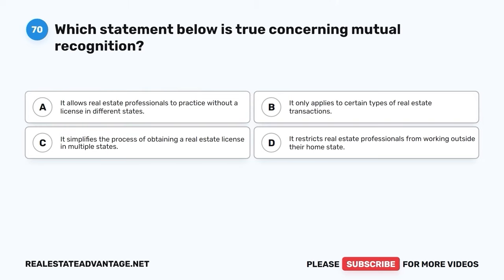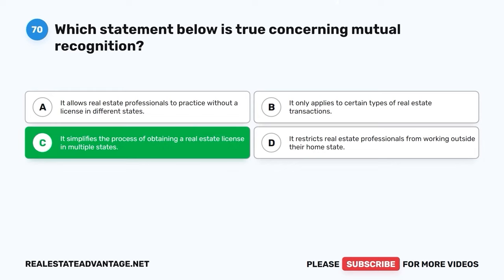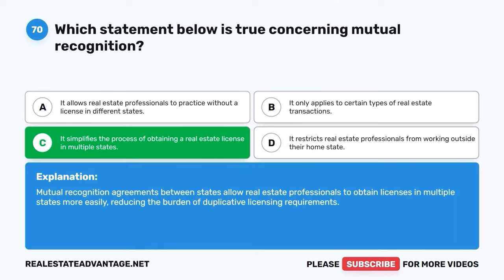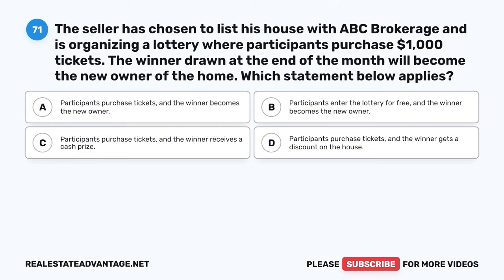Question 70. Which statement below is true concerning mutual recognition? A. It allows real estate professionals to practice without a license in different states. B. It only applies to certain types of real estate transactions. C. It simplifies the process of obtaining a real estate license in multiple states. D. It restricts real estate professionals from working outside their home state. The correct answer is C: It simplifies the process of obtaining a real estate license in multiple states. Mutual recognition agreements between states allow real estate professionals to obtain licenses in multiple states more easily, reducing the burden of duplicative licensing requirements.